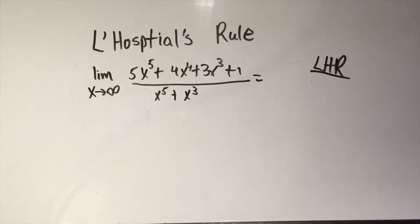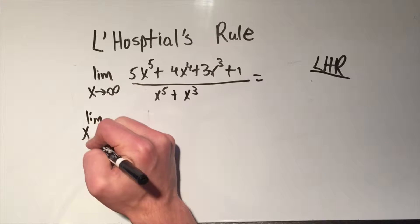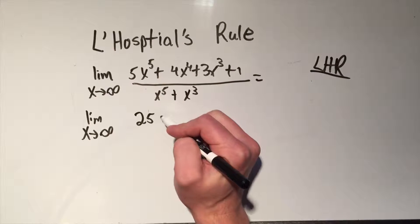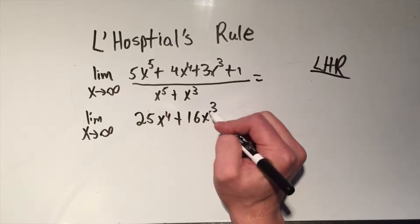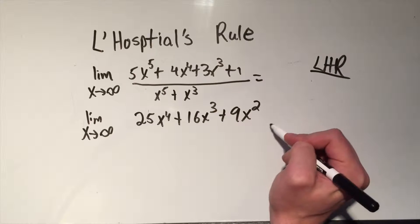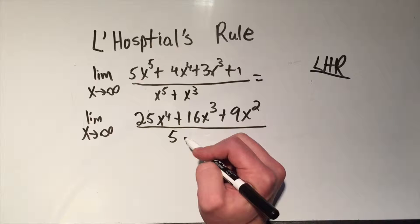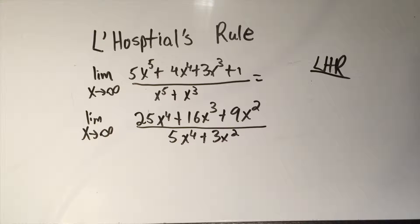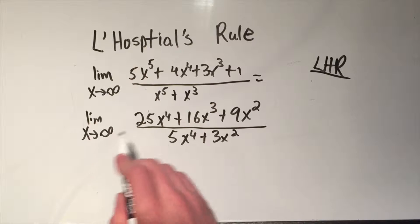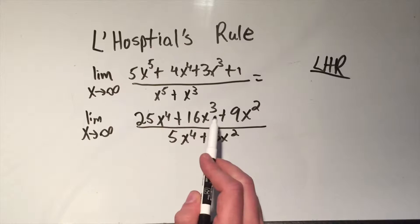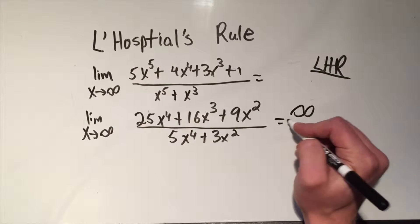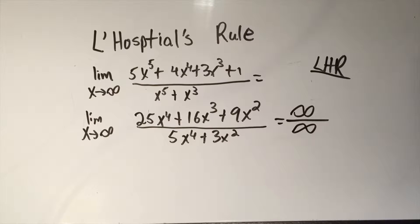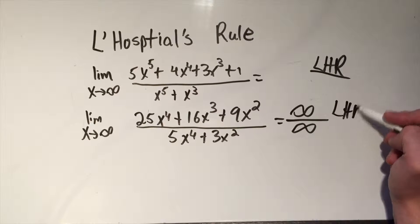And L'Hospital's rule says I take the derivative of the numerator. I've still got limit as x goes to infinity. I'll take the derivative of the numerator. So that's 5 times 5 is 25x to the 4th plus 16x cubed plus 9x squared plus 0 over 5x to the 4th plus 3x squared. Now I'm allowed to try the limit again. So let me plug in infinity again. Well, that's infinity to the 4th plus infinity cubed, it's definitely infinity. Same on the bottom, infinity to the 4th times 5 plus infinity squared times 3 is infinity. I got infinity over infinity again. Well, you know what I'm going to do. I'm going to do LHR.